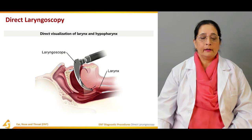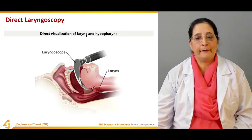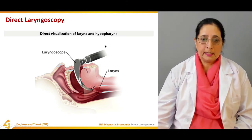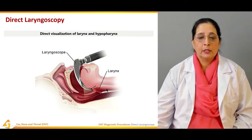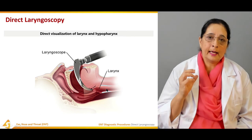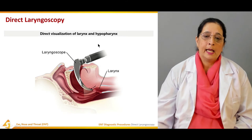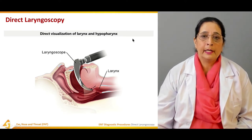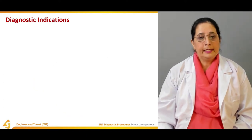Direct laryngoscopy is direct visualization of the larynx and hypopharynx. This is the laryngoscope — you can see the larynx here — and when there is direct visualization of the larynx and hypopharynx using laryngoscopy, it is known as direct laryngoscopy.